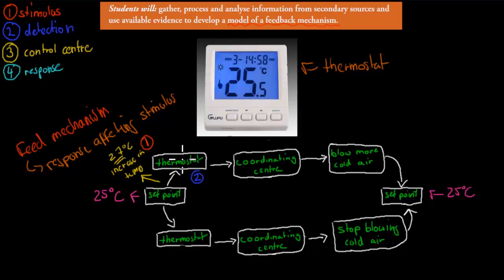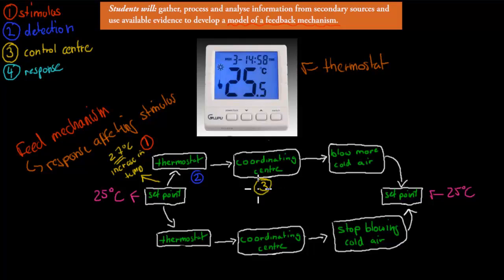The thermostat is our detection part. Once it's detected a change, it's going to send a signal to the coordinating center. In this case the coordinating center is just the computer part of the thermostat. So the control center, which is the coordinating center, is number 3. This coordinating center has a mission, which is to bring that temperature back down, and it can just tell it to blow more cold air.